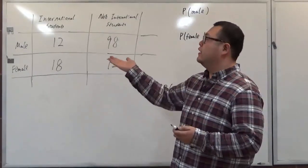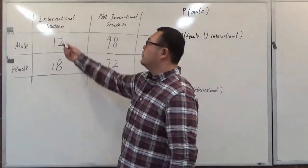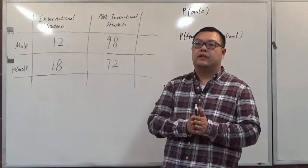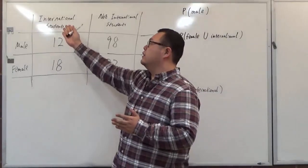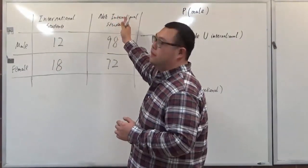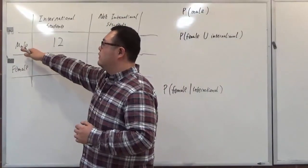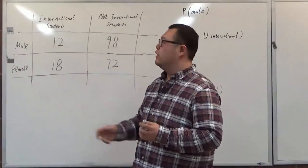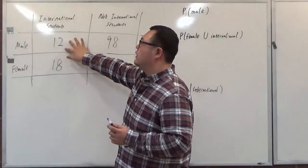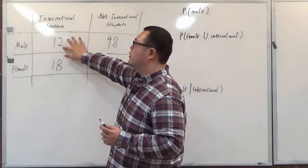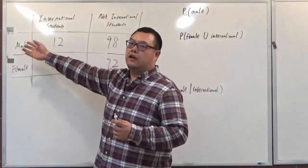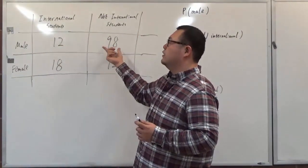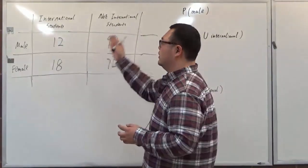We have a two-way table. There is a survey taken from the students at BMCC. The international student is the first column, and the second column is the non-international student. The rows are the male student row and the female student row. Each input is an intersection — for example, the 12 here means those 12 students are male international students, and the 98 are the male non-international students.